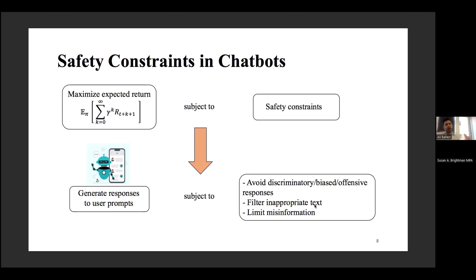Under the hood of large language models, there exists a reinforcement learning layer, and we have the paradigm of reinforcement learning from human feedback. When a chatbot provides an answer and you give a thumbs up or thumbs down, that feedback constitutes constraints or feedback from humans.